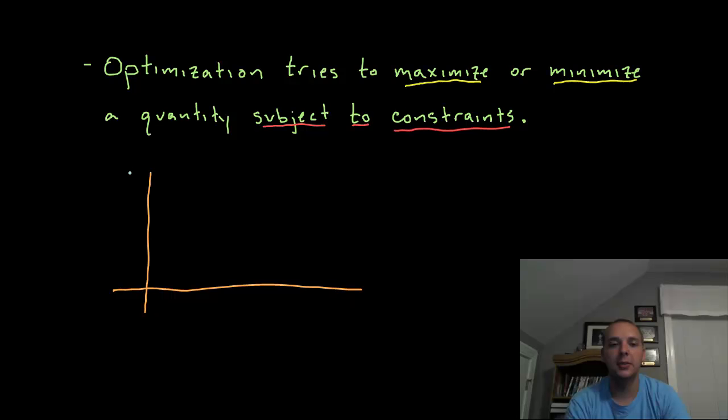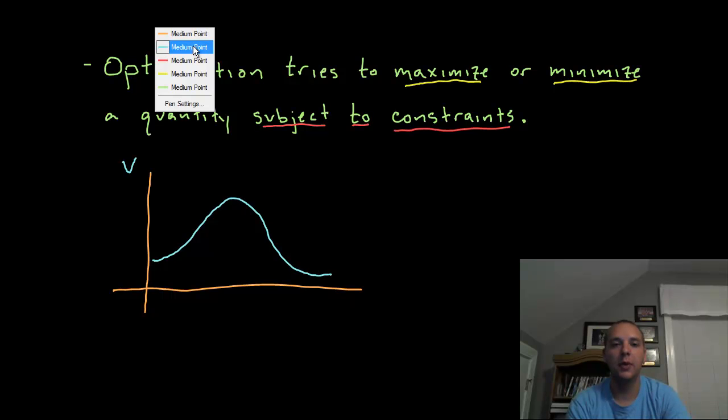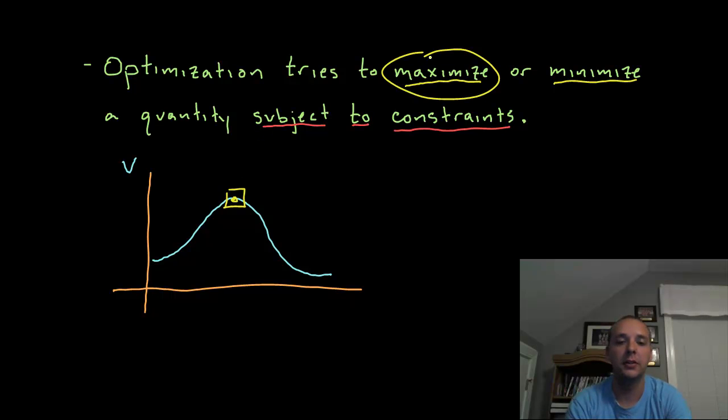As a simple example, maybe we are looking at the volume of a box. Based on these words maximize and minimize, what you might think we would do is look at either the graph or the function that pertains to volume, and then if you graphed it you would be able to either see or find, for instance, a relative maximum of the function. That is a great idea, and if we could do that we certainly would.